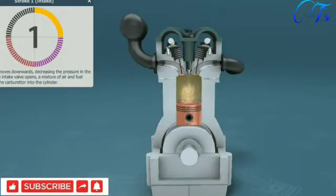The first stroke is intake. The piston moves downwards, decreasing the pressure in the cylinder. The intake valve opens and a mixture of air and fuel flows from the carburetor into the cylinder.